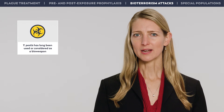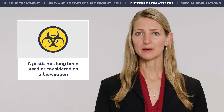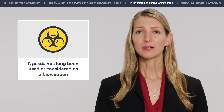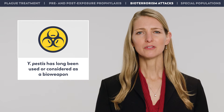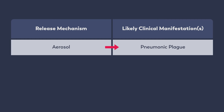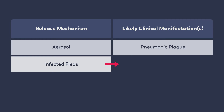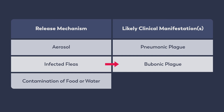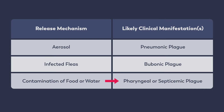Considerations for treatment and prophylaxis of plague in the event of a bioterrorism attack: Y. pestis has long been used or considered as a bioweapon. An outbreak of plague following the release of Y. pestis could look quite different from naturally occurring plague, and the release mechanism would influence the clinical manifestations. An attack with aerosolized Y. pestis would likely result in pneumonic plague; a release of infected fleas would result in bubonic plague; and contamination of food or water supplies would likely lead to pharyngeal or septicemic plague. However, any method of release could result in multiple clinical forms.